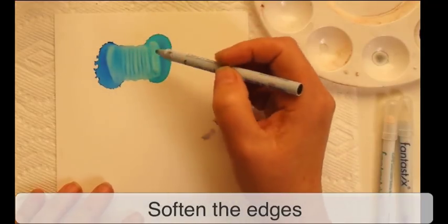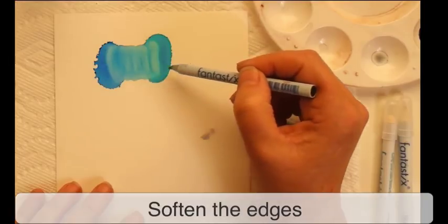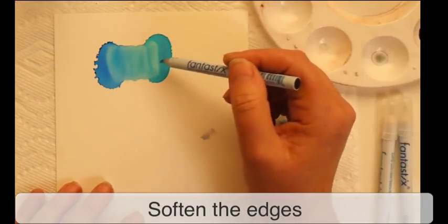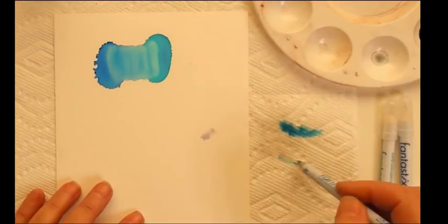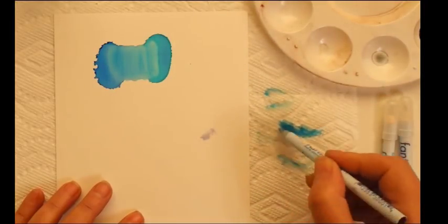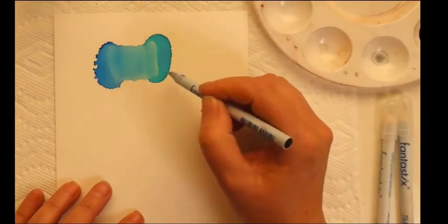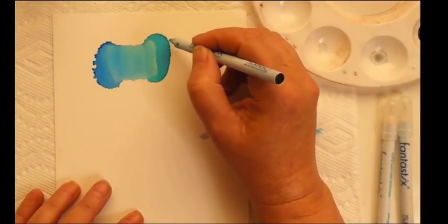Depending on how wet it is, you'll either get stripes, but if it's pretty wet that will smooth out to a real nice smooth area. Here you can see I've got some color on my Fantastix - I just wipe it on a paper towel.